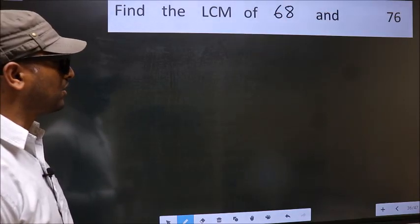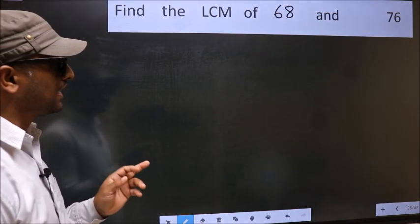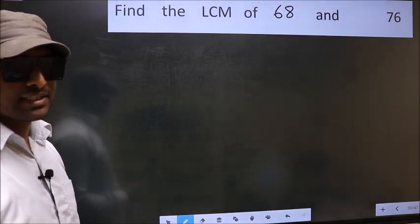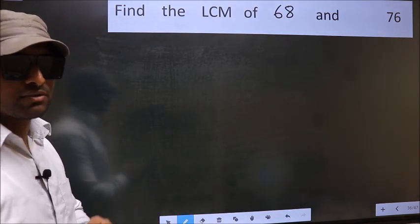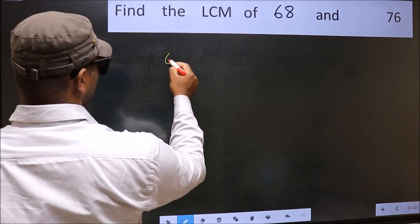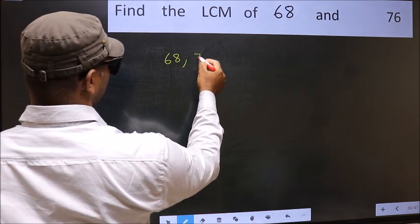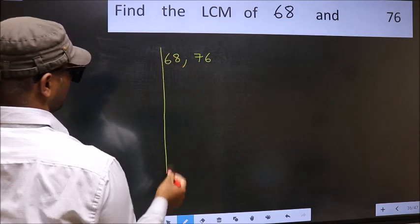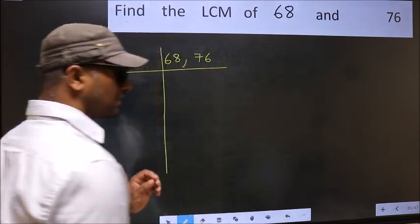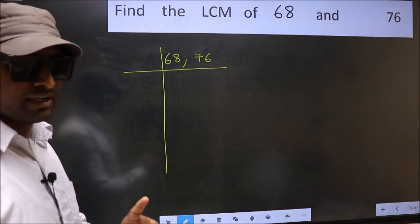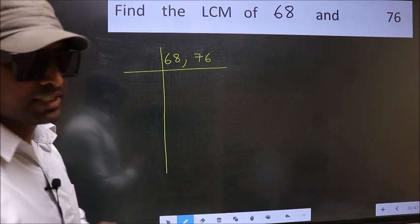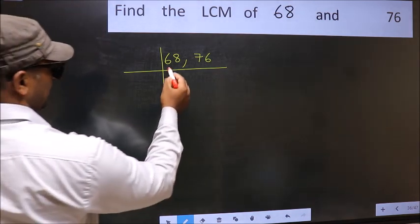Find the LCM of 68 and 76. To find the LCM, we frame it as: 68, 76. This is step one. Now focus on the first number, which is 68.